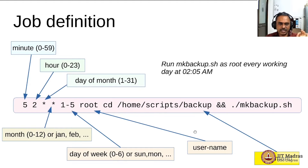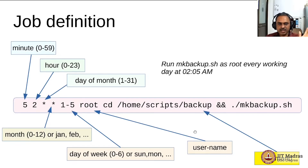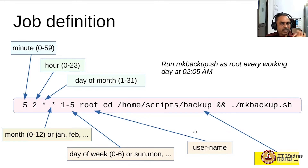Here we are saying every fifth minute. The second field — 2 — means 2 AM, so 2:05 AM is the exact time when the script will be executed. The third field is about the day of the month: if you want a job running on every first of the month you put 1 there, every tenth you put 10, but if you put a star it means it will run on every day of the month.